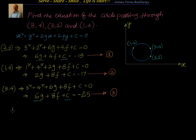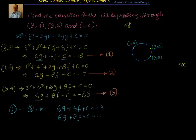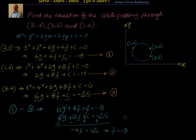Subtracting Equation 1 from Equation 3: (6g + 4f + c = −13) subtracted from (6g + 8f + c = −25). The 6g and c cancel, leaving −4f = −25 + 13 = −12, so f = −3. We have found f = −3.